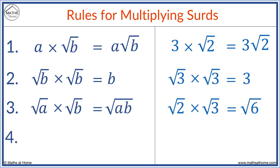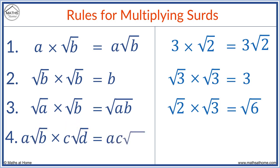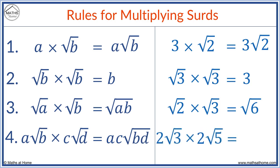Rule 4: a root b times c root d equals ac times square root of bd. We multiply the numbers in front of the square root, then multiply the numbers inside the square root. For example, 2 times 2 equals 4, and square root 3 times 5 equals square root 15.